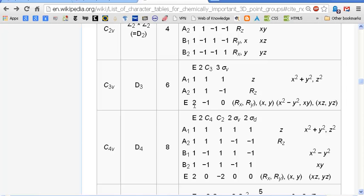E, when you label a column, represents the identity operation or identity symmetry element. But E, when you're labeling a row, represents a 2, a doubly degenerate wave function, for example. So E here, used in the same table, has two different meanings.